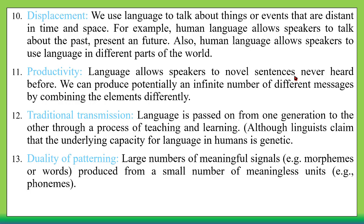Then we have traditional transmission — language is passed on from one generation to the other through a process of teaching and learning. Linguists claim that the underlying capacity for language is genetic — there is something called universal grammar that we are born with. However, we still pass specific languages through generations: our children learn language from us, we teach them, and we learned language from our parents and at school.